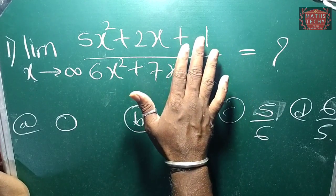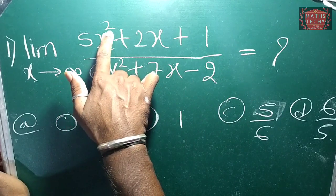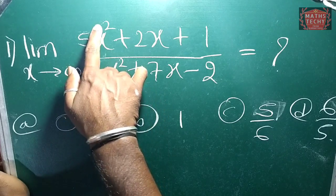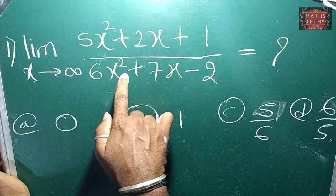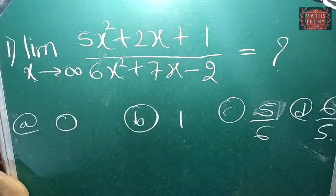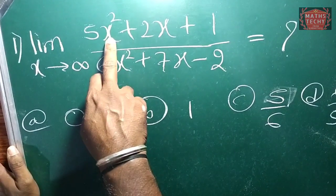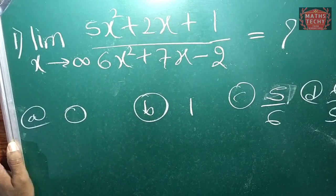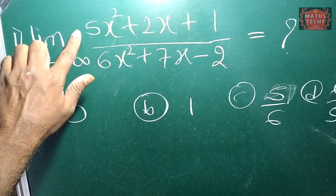First, check the numerator's degree and the denominator's degree. So if the numerator degree and denominator degree are equally equal, the answer is: take the coefficient of the numerator's highest degree and the coefficient of the denominator's highest degree.